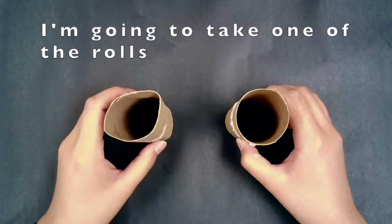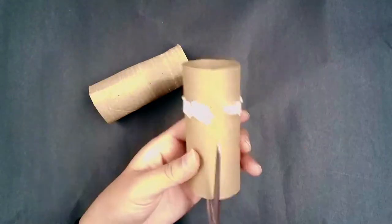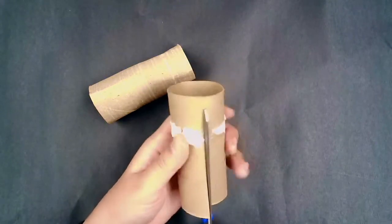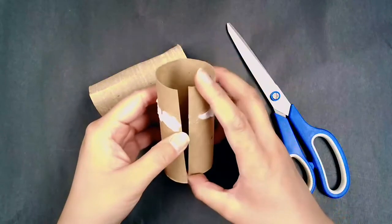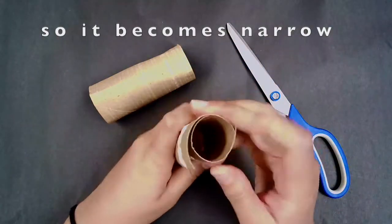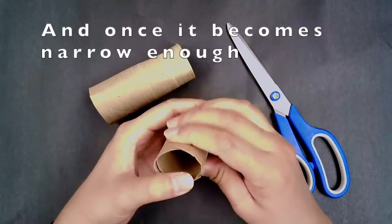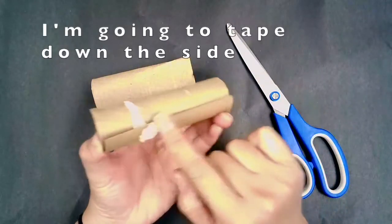Alright, let's get started. I'm going to take one of the rolls and cut across the middle. It should be able to open like this, then I'm going to squeeze the tube so it becomes narrow. And once it becomes narrow enough, about half the size it used to be, I'm going to tape down the side.